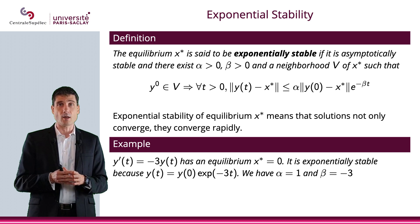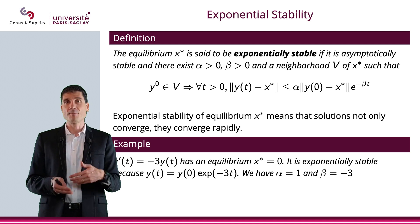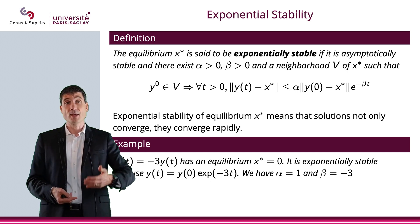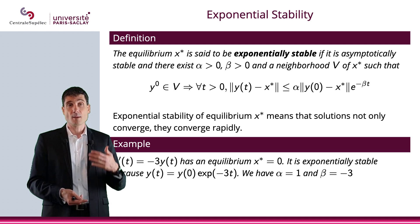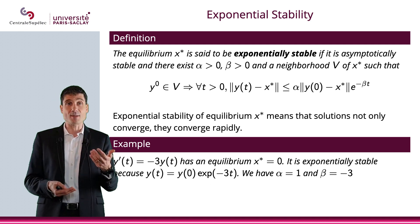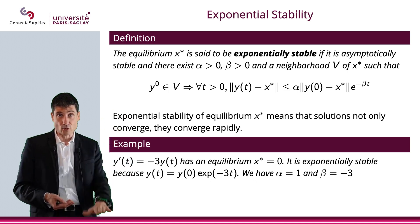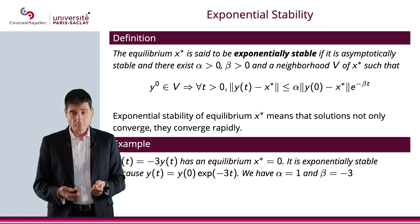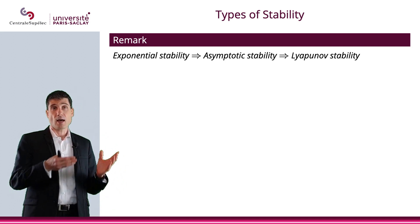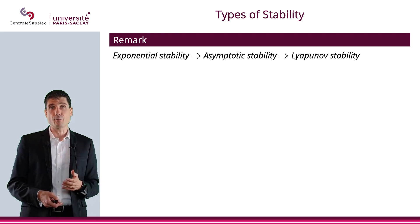We saw an example in the previous videos: y' of t equals minus 3y of t, i.e., y' equals my with negative m. The equilibrium is zero, and it is exponentially stable because y of t equals y0 times exponential mt. If m is negative 3, you have the exponential minus 3t making you go to zero quickly. Exponential stability is the strongest, implying asymptotic stability, which in turn implies Lyapunov stability.